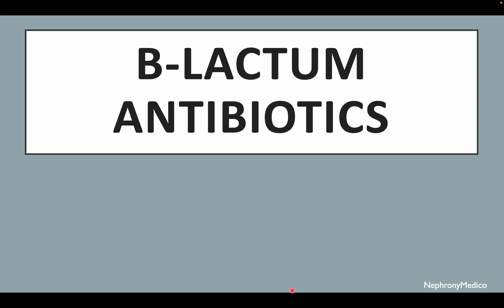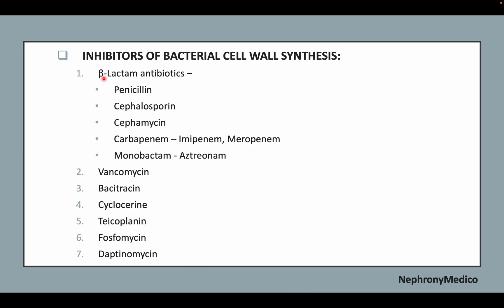Hello and welcome. Let's talk about beta-lactam antibiotics. Inhibitors of bacterial cell wall synthesis includes beta-lactam antibiotics like penicillin, cephalosporin, cephamycin, carbapenem like imipenem, meropenem, and monobactam like aztreonam, vancomycin, bacitracin, cycloserine, teicoplanin, phosphomycin, and daptomycin.